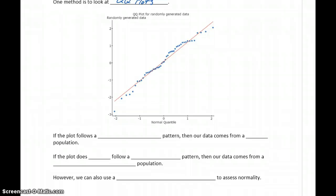To interpret that, we looked at our plot to see if it follows a straight line pattern. If our data followed that straight line pattern, we would say that our data comes from a normally distributed population or from a normal population.